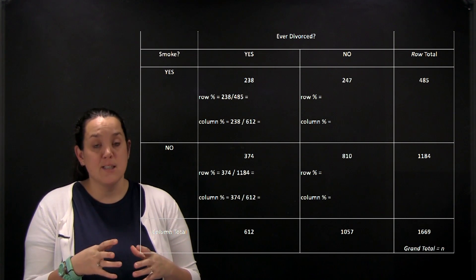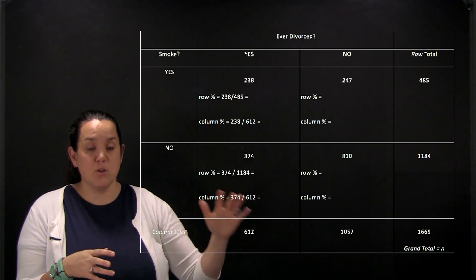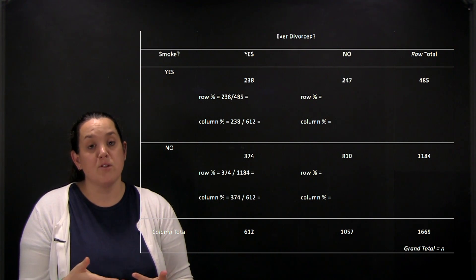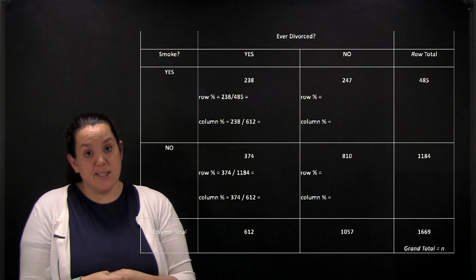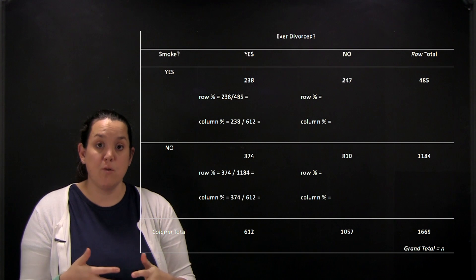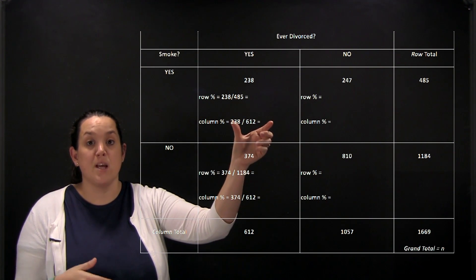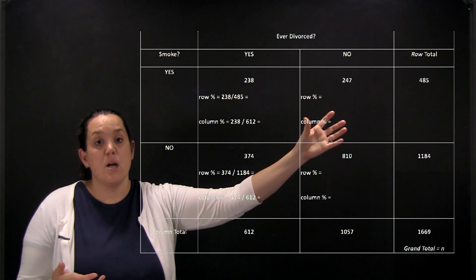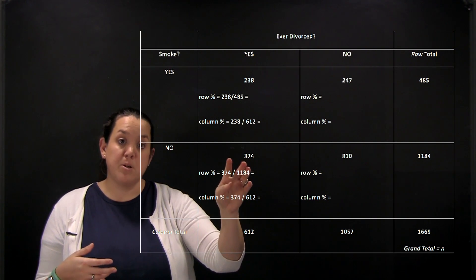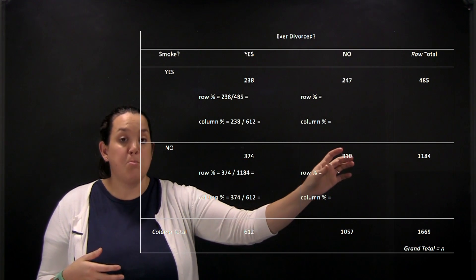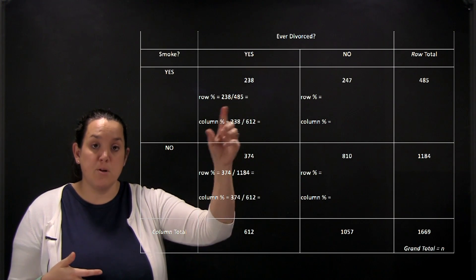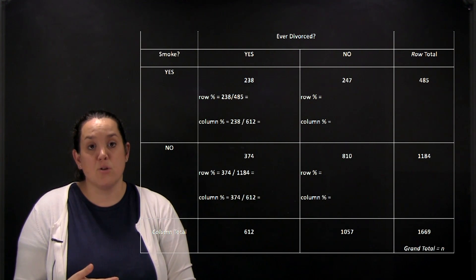That information is then displayed in what's called a contingency table. Sometimes a contingency table is called a two-way table, meaning that two variables are being displayed. Within a contingency table, each cell represents a unique combination between the two variables. So this cell here is people who say yes they smoke and yes they've been divorced; here is yes they smoke, no they haven't been divorced; these are people who do not smoke but have been divorced; and finally people who do not smoke and have not been divorced.